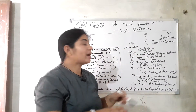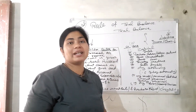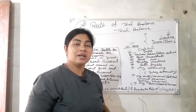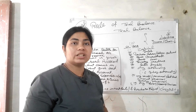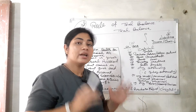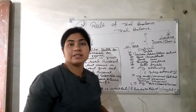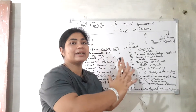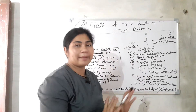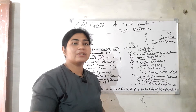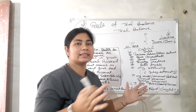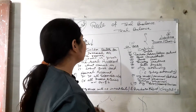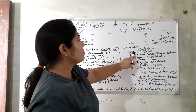On the credit side of the trial balance, 10 items will come. If you keep these in mind, your question will be easily solved. The amount calculations you will have to do yourself, but here I am telling you only the items so they stay in your mind — which items come on the credit side and which come on the debit side.